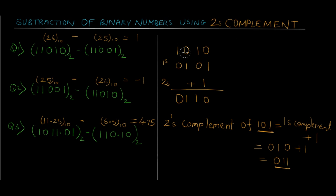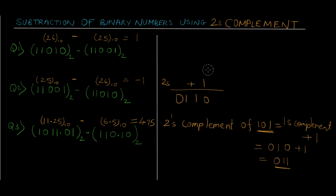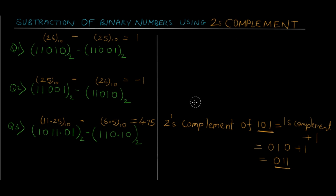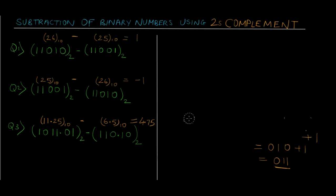Using this method we're going to be performing subtraction of two binary numbers. 2's complement can be used to perform subtraction as well as represent negative numbers. It gets easy because once we calculate the 2's complement we don't need to perform the subtraction — instead we need to perform addition, which is much easier.